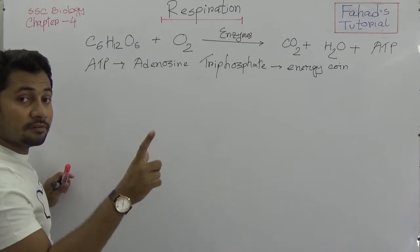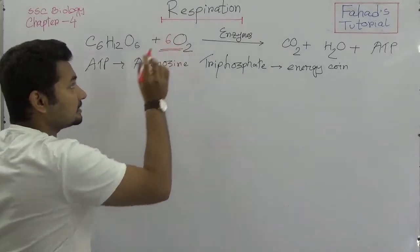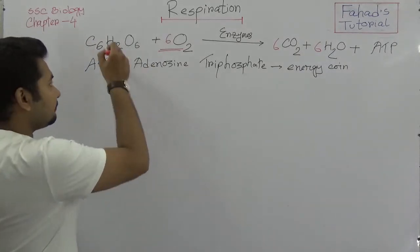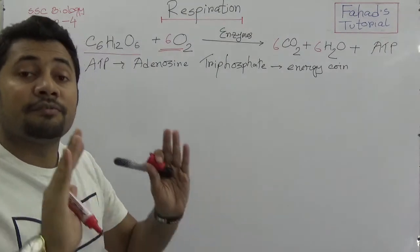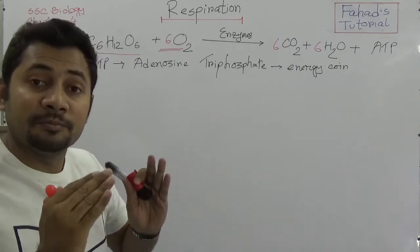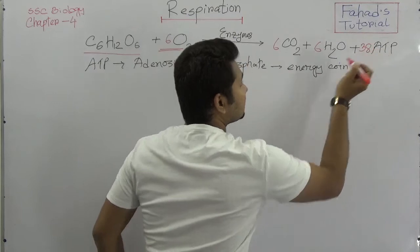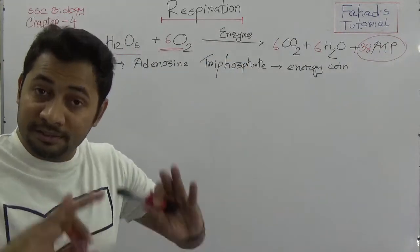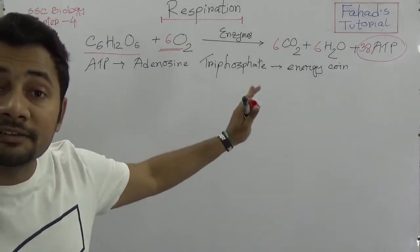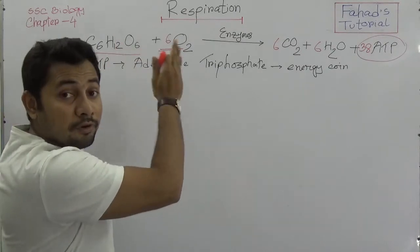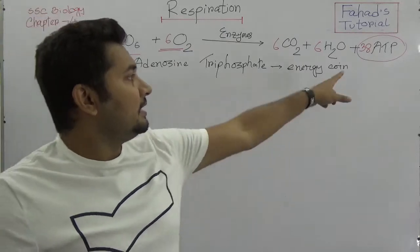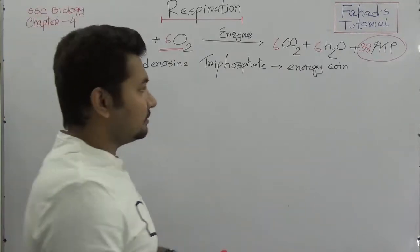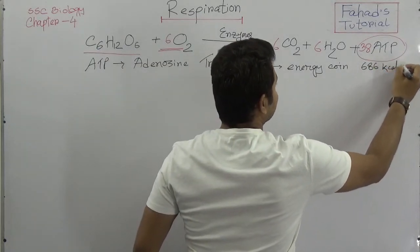One molecule of glucose will be oxidized by six molecules of oxygen, and it will produce six molecules of carbon dioxide and six molecules of water. If this glucose is fully oxidized using environmental oxygen, it will produce more energy — that is 38 ATP — which is equivalent to more or less 686 kilocalories per mole.